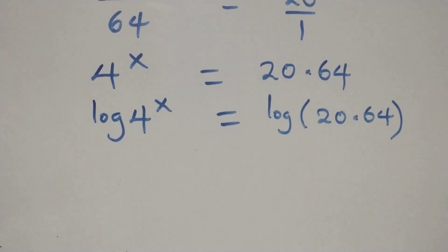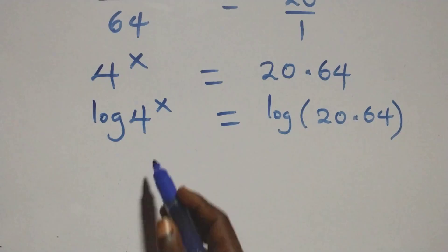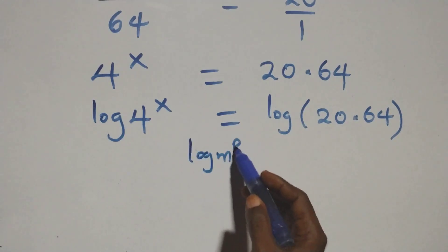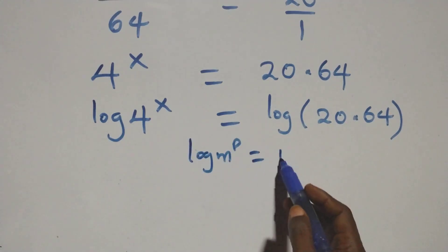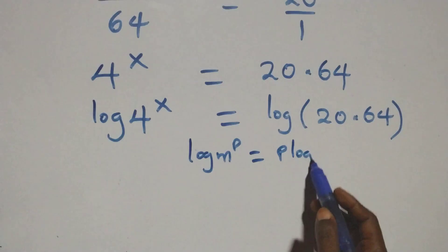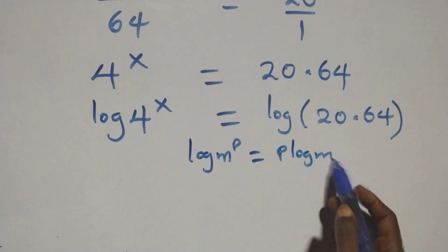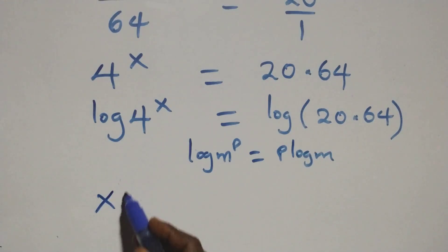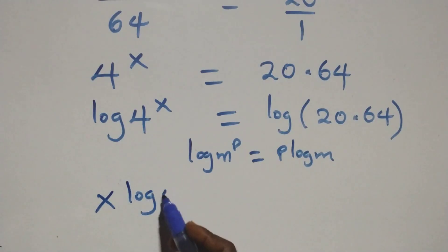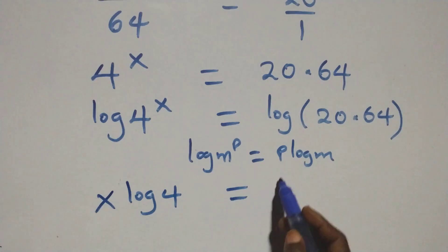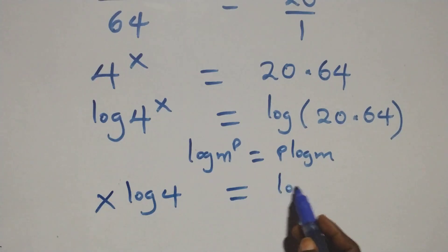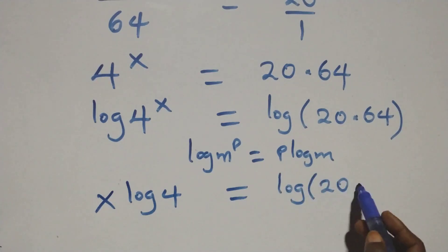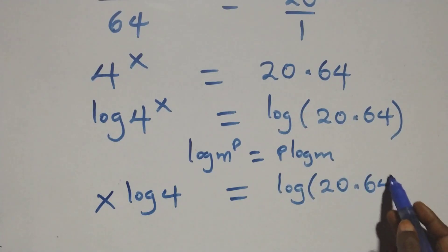Then, from here, we apply the power log rule. When we have log n raised to power p, this is the same thing as p times log n. At this here, this becomes x times log 4 equals to log of 20 times 64.